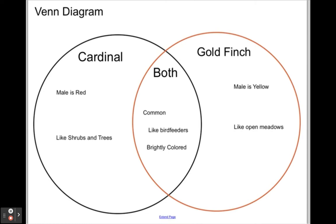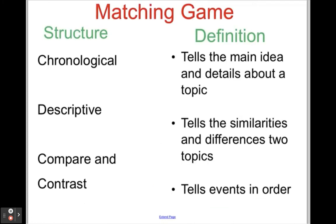I'm going to put this in a Venn diagram. You'll see that I put cardinal and goldfinch on the outside and 'both' in the middle. What did they have in common? They both like bird feeders, and they're both brightly colored. On one side, the male goldfinch is yellow and likes open meadows. The cardinal is red and likes shrubs and trees. Using a Venn diagram really helps me see the differences.